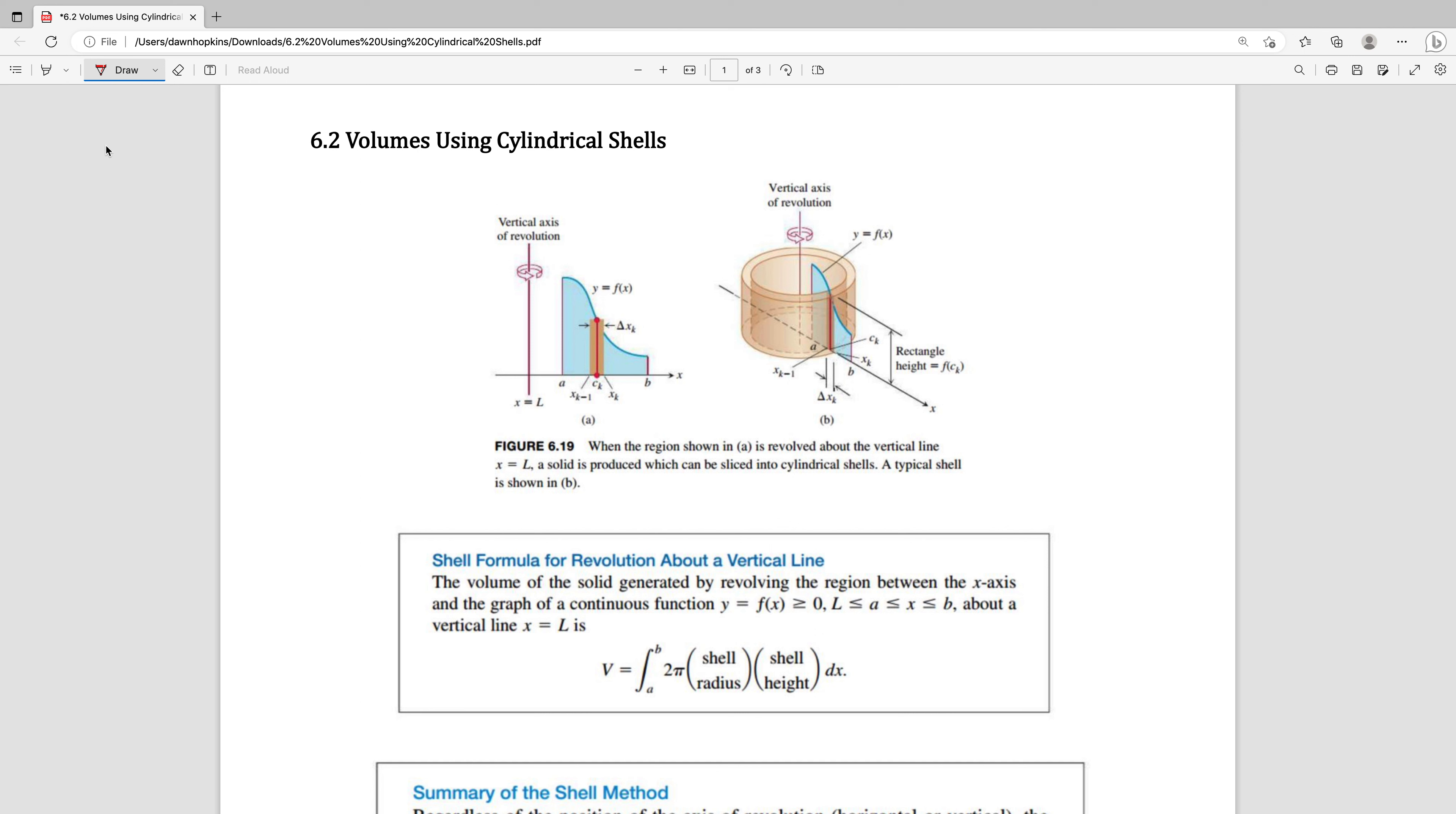If you can imagine you've got a three-dimensional mass and imagine taking round cookie cutters that are concentric circles and just slicing off thin shells. So you'd have a cylinder but it would have a very thin width. That's the idea of this method.